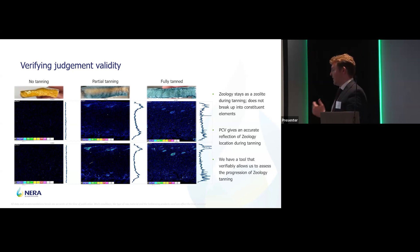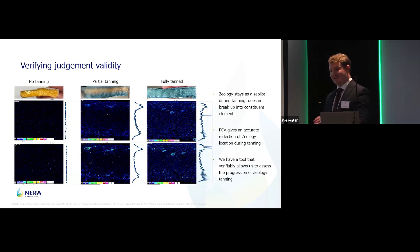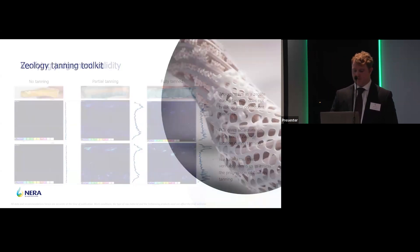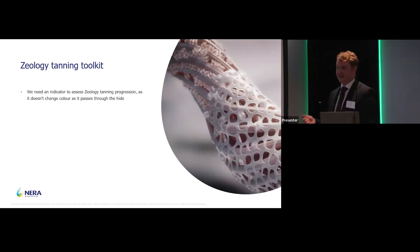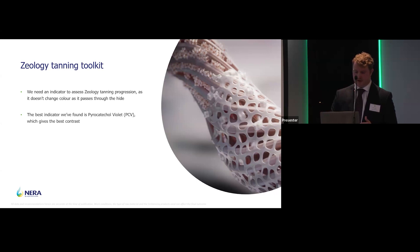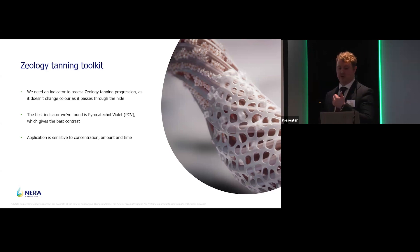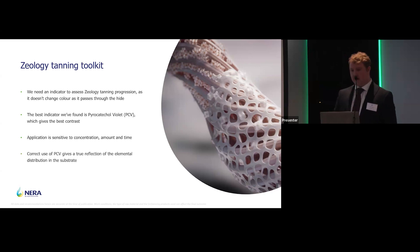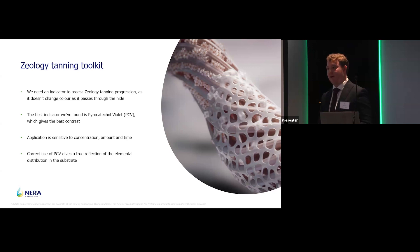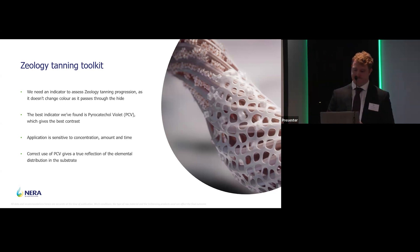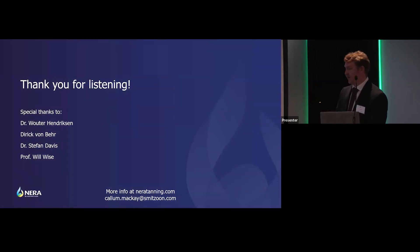To take that back to the question at the start — the title of the presentation — through using PCV, we now have a tool to assess the progression of zeology throughout the tanning process. To quickly wrap up: we need an indicator for zeology because it's white versus white — you can't see it in the same way as chrome to assess penetration through the cross-section. The best indicator we found is pyrocatechol violet (PCV); it gives the best and most consistent contrast. Application needs to be careful because it's sensitive to concentration, amount of application, and time. And when using it correctly, PCV gives you an accurate reflection of the elemental distribution within your substrate. Thank you very much — for more information, please send me an email or visit neeratanning.com.